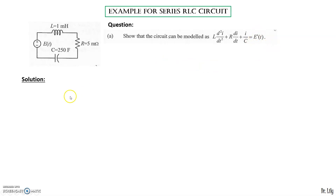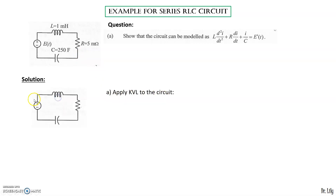Since you have a series circuit, you need to apply KVL to the circuit. Usually you need to redraw the circuit. Once you redraw it, you need to assume the current flow for the circuit. We assume the current flows clockwise. Once we have the current flow, we put the polarity for each of the elements.